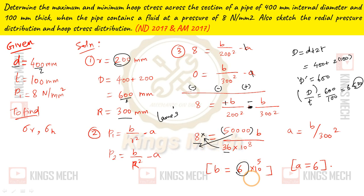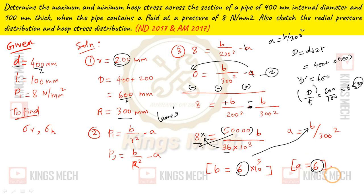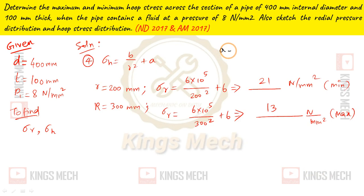We get B = 6 into 10 to the power 5. Then substituting into the second equation with R = 300: A = B divided by 300 squared = 6 into 10 power 5 divided by 300 squared. We get A = 6. So A = 6 and B = 6 into 10 to the power 5.